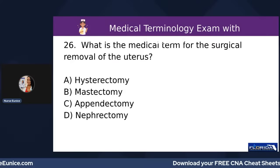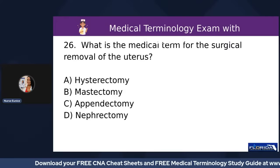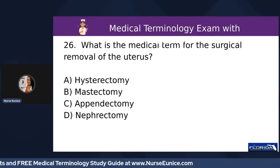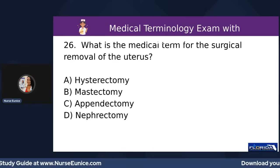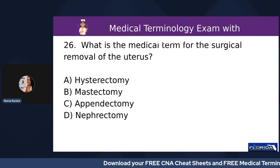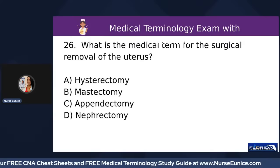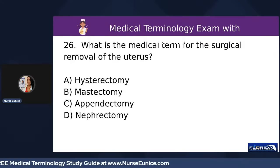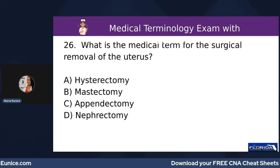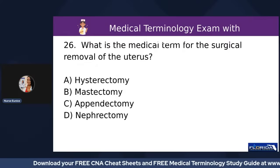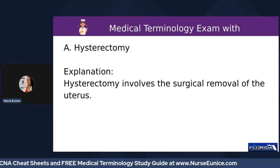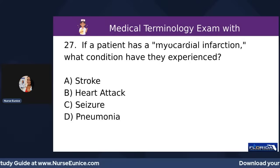Number twenty-six: what is the medical term for the surgical removal of the uterus? A) hysterectomy, B) mastectomy, C) appendectomy, or D) nephrectomy. The suffix '-tomy' means removing something. 'Hyster' refers to the uterus or female organ. 'Mast' refers to the breast. 'Append' is the appendix. 'Nephro' refers to the kidney. The answer is A, hysterectomy.